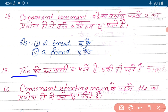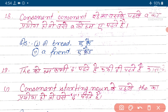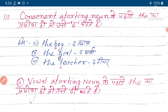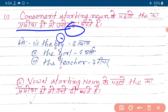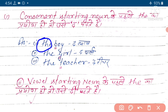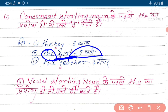'The' ko hum kabhi 'da' padhate hain aur kabhi 'dhi' padhate hain. Iska karan ye hai - consonant starting noun ke pahle 'the' ka prayog ho, toh hum log 'da' padhate hain. Jaise 'boy' - yeh consonant se start hai, isi liye iske just saamne jo prayog wa hai 'the', usko hum 'da boy' padhenge. Wohin 'girl' - girl consonant starting noun hai, isi liye isme maujud 'the' ko hum 'da girl' padhenge, 'dhi' nahi.